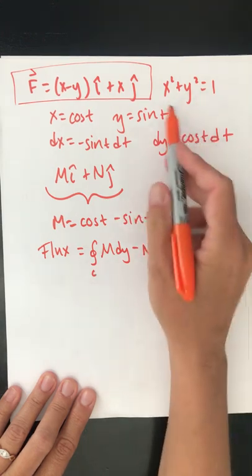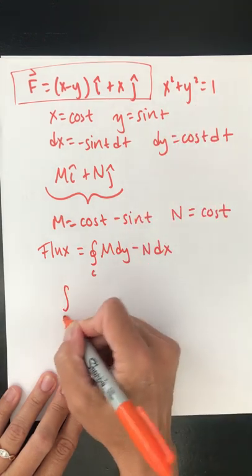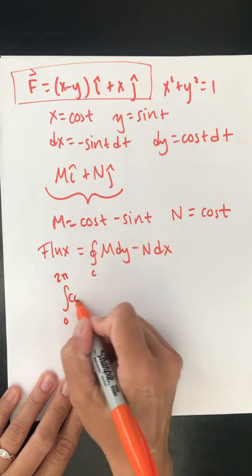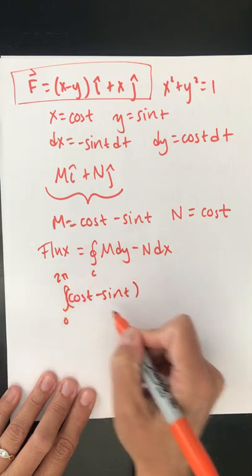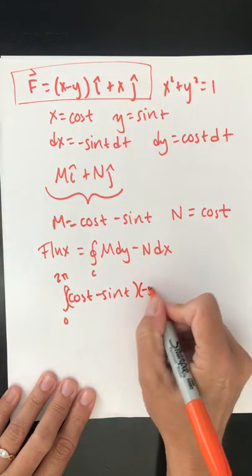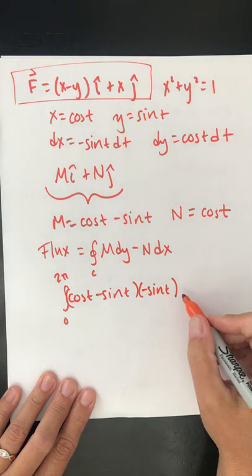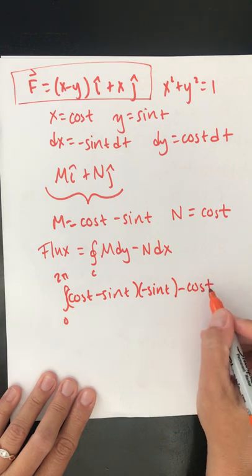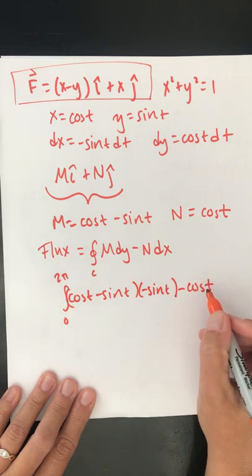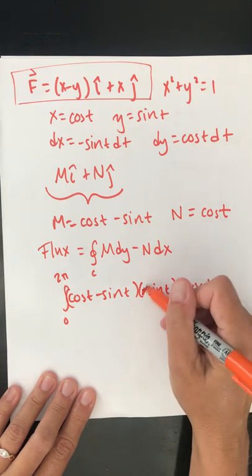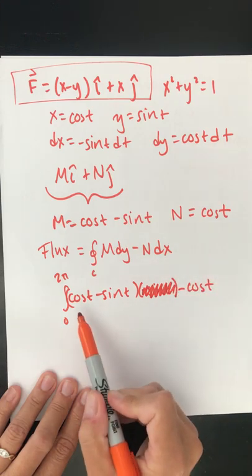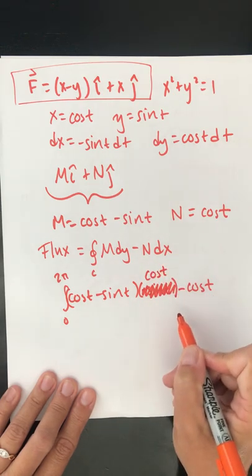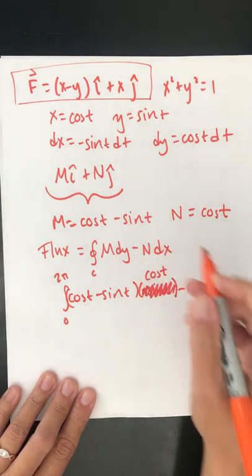So as I move around this whole circle, my values go from 0 to 2 pi of m cosine t minus sine t times dy minus n dx. Oh man, I put the wrong guy in the wrong place. So let's start over. I have m dy minus n dx.